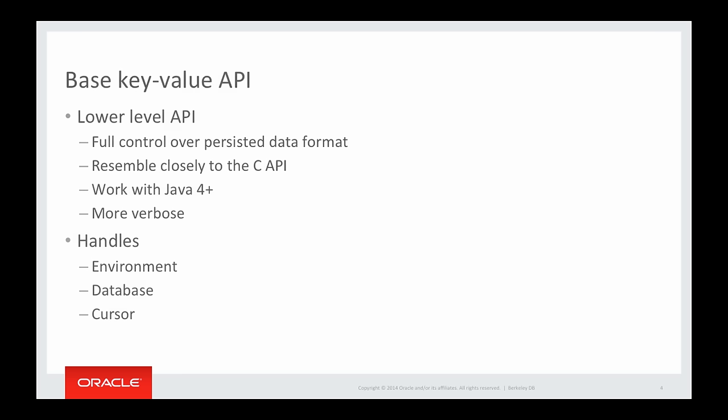The Base Key-Value API is a lower-level API. It offers you full control over how your data is persisted in your database. It resembles closely the C API, and it works with Java 4 and above, but the downside is it's more verbose. The fundamental objects to deal with in the Key-Value API are handles: there are environment handles, database handles, and cursor handles.